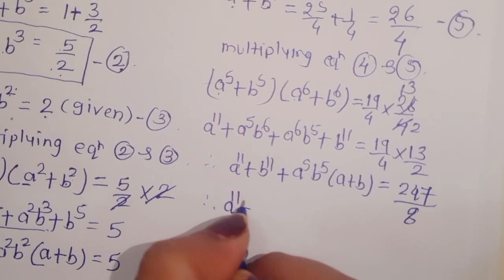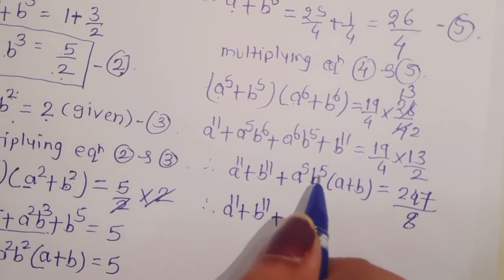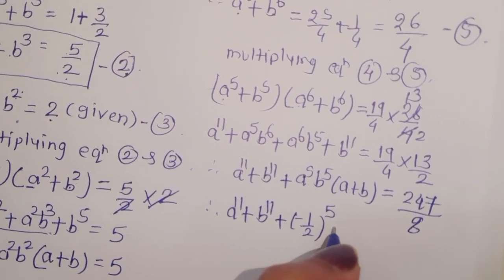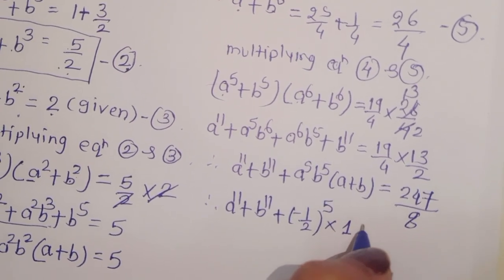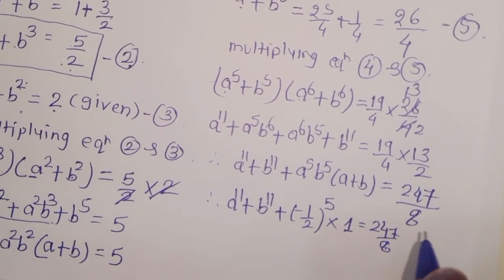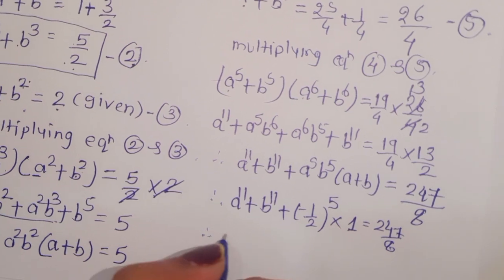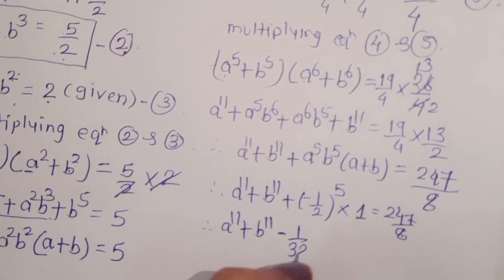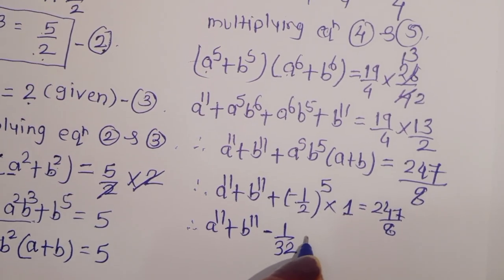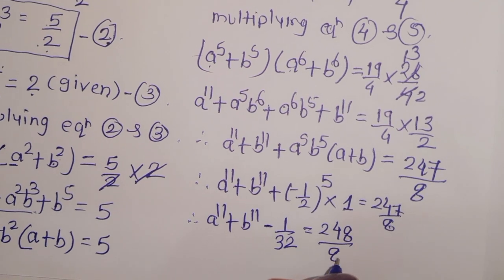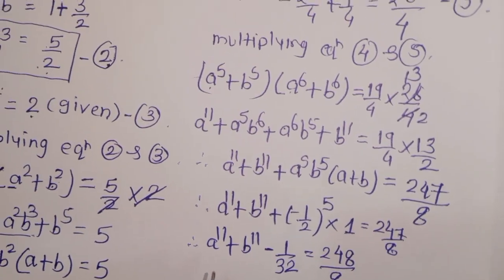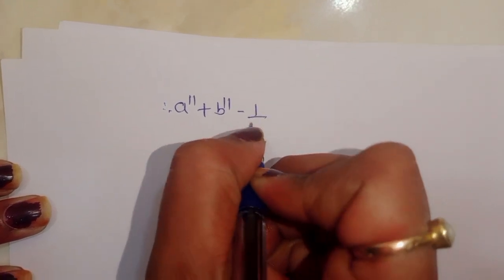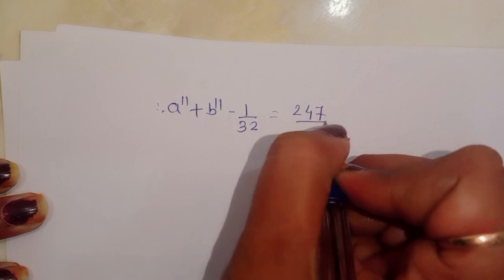Substituting: ab = minus 1 upon 2, so (ab)^5 = (minus 1 upon 2)^5 = minus 1 upon 32, and a plus b = 1. So: a power 11 plus b power 11 minus 1 upon 32 is equal to 247 upon 8.